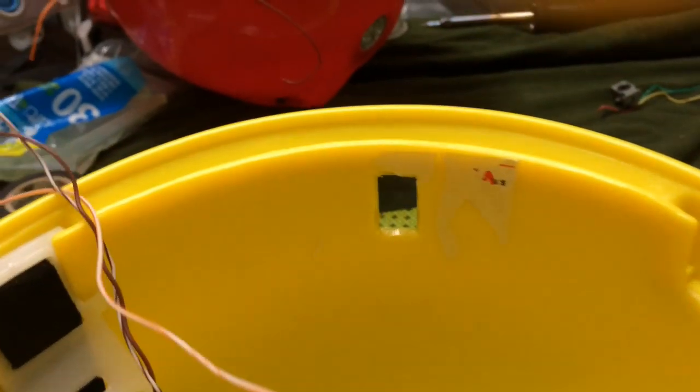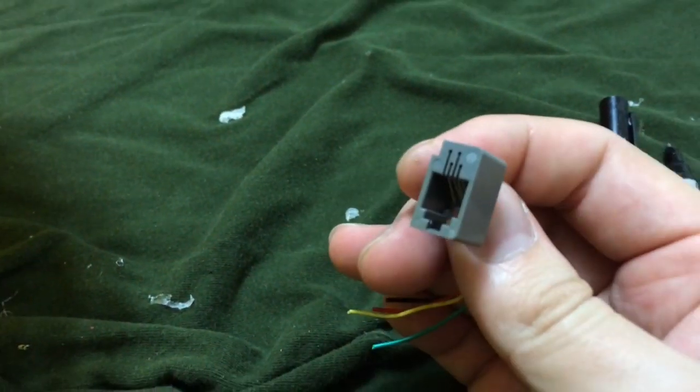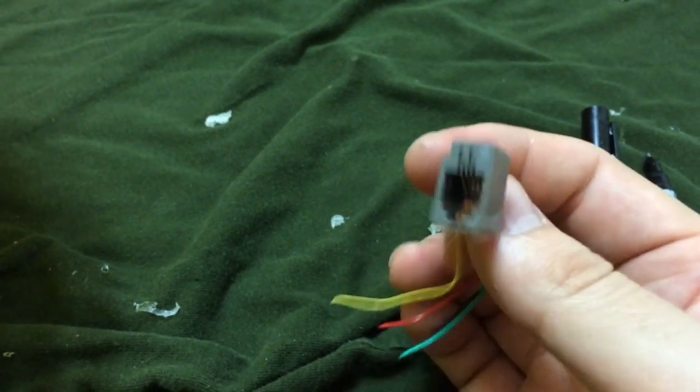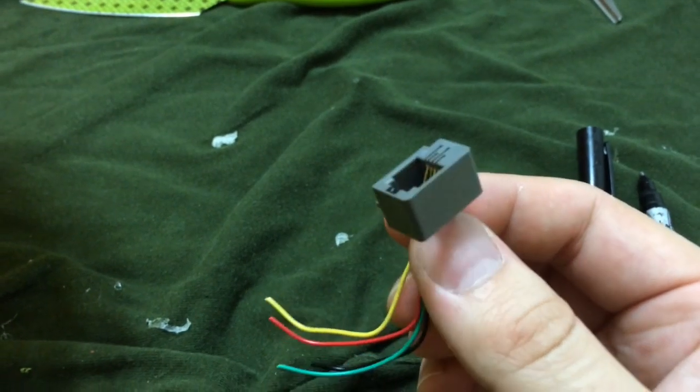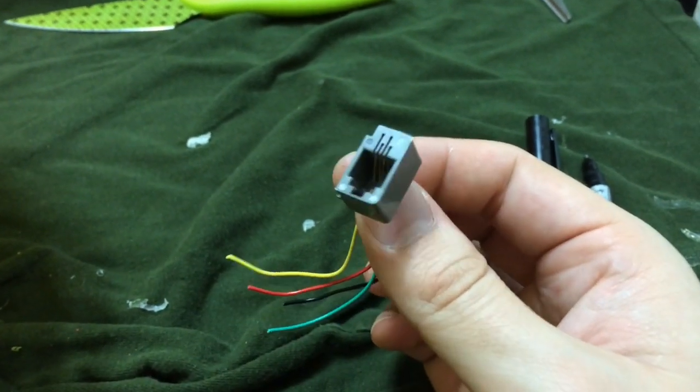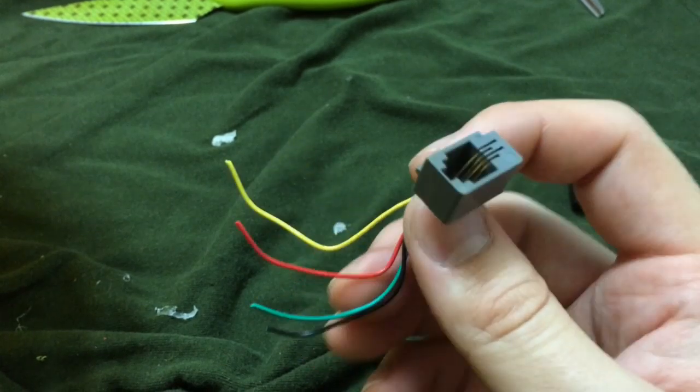The hole is going to be for a phone jack piece. Basically I'm going to use this to connect from one helmet to another. You can get one of these by buying a phone from like a Goodwill and taking it apart, and you can probably get two or three phone jacks from there for three dollars, so it's pretty cheap.